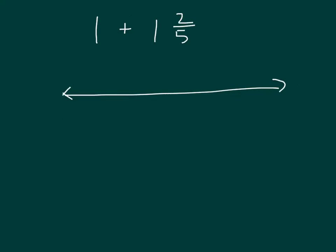Here we have 1 plus 1 and 2 fifths. We'll start at 0. First, we travel 1 unit. Where are we at? 1.